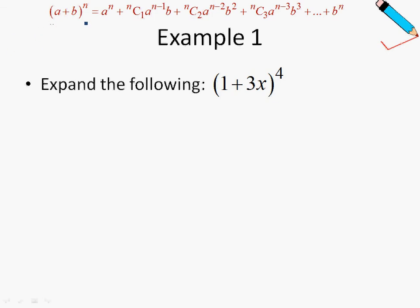If you see the formula over here, in this case my a is 1, my b is 3x, and my n is 4. So following the formula, let's just write down the terms: a is 1, b is 3x, and n is 4.